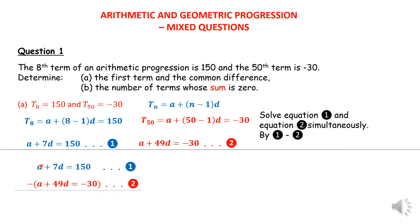I'll solve them simultaneously by subtracting equation 1 minus equation 2. The a terms eliminate, so I get 7 minus 49 equals minus 42d, and 150 minus negative 30 is 180. So the common difference is negative 30 over 7.